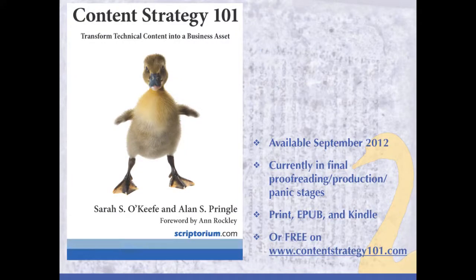Speaking of contentstrategy101.com, the book is mostly done and we're getting close. It will be available in print, ePub, and Kindle in September. We are also leaving the full text on the website — contentstrategy101.com will have the full text of the book in HTML for free. Print, ePub, and Kindle you will have to pay for, but the full content in HTML will be free.